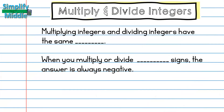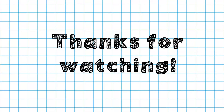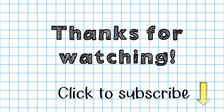Let's recap: when multiplying or dividing integers, the rules are the same. When the signs are different, the answer is always negative. That wraps up our lesson — thanks for watching, and feel free to subscribe to watch this and other lessons!